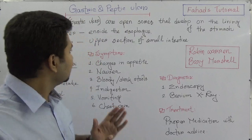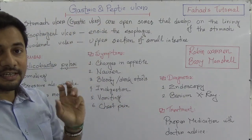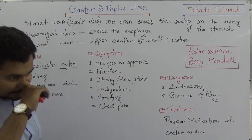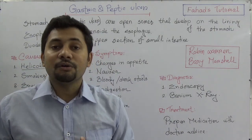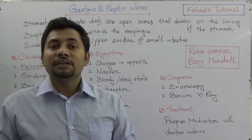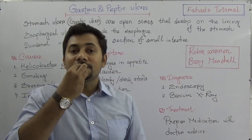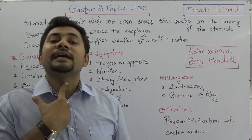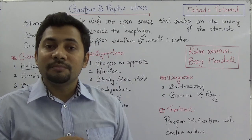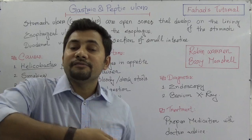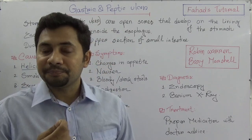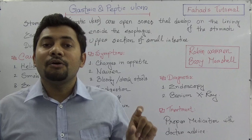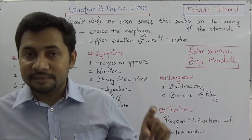Peptic ulcer is actually of three types: stomach ulcer, esophageal ulcer, and duodenal ulcer. To understand these things we need to know the GI tract or gastrointestinal tract or alimentary tract. Our alimentary tract starts from the mouth or buccal cavity and ends with the anus. When we take food through the buccal cavity, we swallow it and through the esophagus it goes to the stomach first, and then to the small intestine, the first part of which is the duodenum.